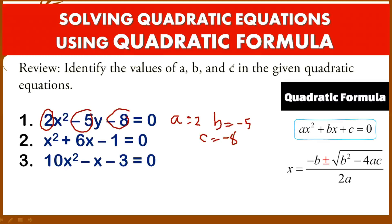For number 2, our A value is 1, our B value is positive 6, and our C value is negative 1. For number 3: 10x² − x − 3 = 0. The A value is 10, B is negative 1, and our C is negative 3.